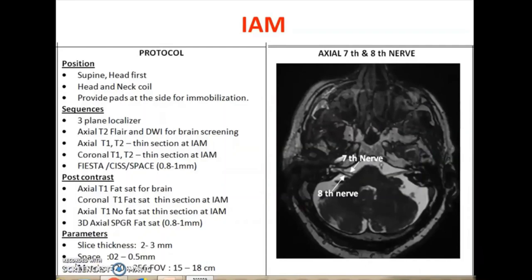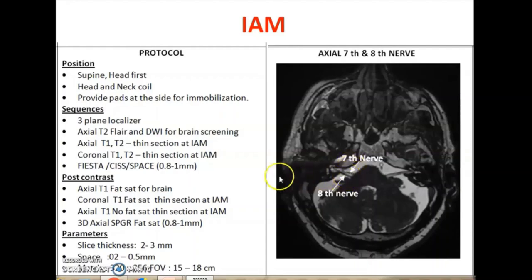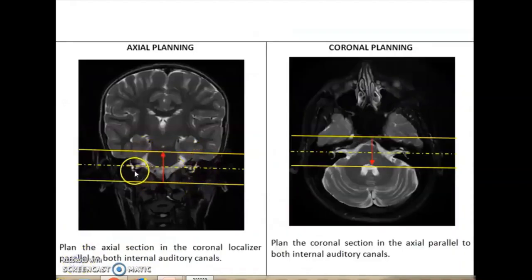If the patient comes with facial spasm or facial palsy, the internal auditory meatus has to be clearly demonstrated to see any pathology. Acoustic neuroma may occupy the internal auditory meatus area, and vascular loops may also be seen overlapping with the cranial nerves. The seventh and eighth nerves have to be clearly demonstrated with the help of FIESTA sequences. The FIESTA sequence with minimum thickness is useful to demonstrate the IAM. Plan on the internal auditory canal area accordingly. Very thin slices from FIESTA sequences are much more useful.